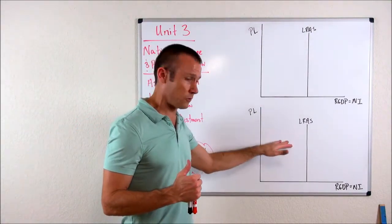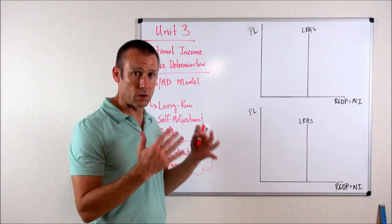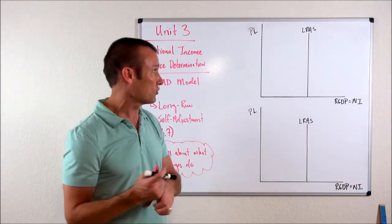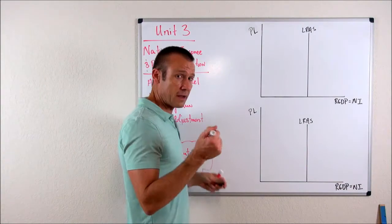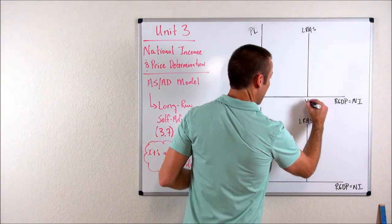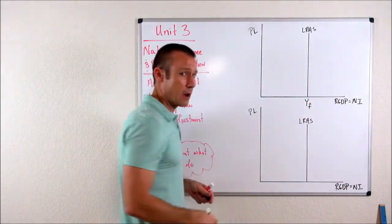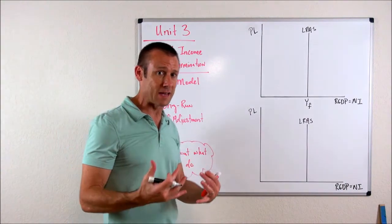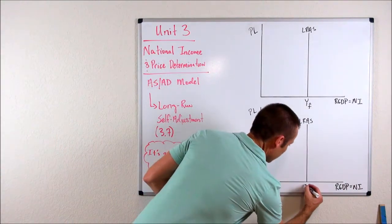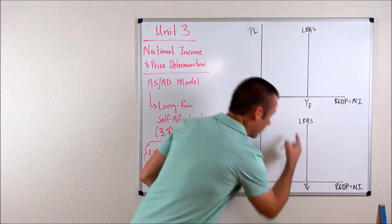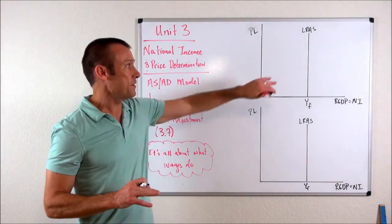Well, let's go take a look at it real quick. I've actually got two models. And the first thing I want to do with these models is I want to show where that LRAS curve is anchored. One hundred percent of the time, it is at full employment output, otherwise known as potential output. And so I'm going to put YF on both graphs. On this one up here,